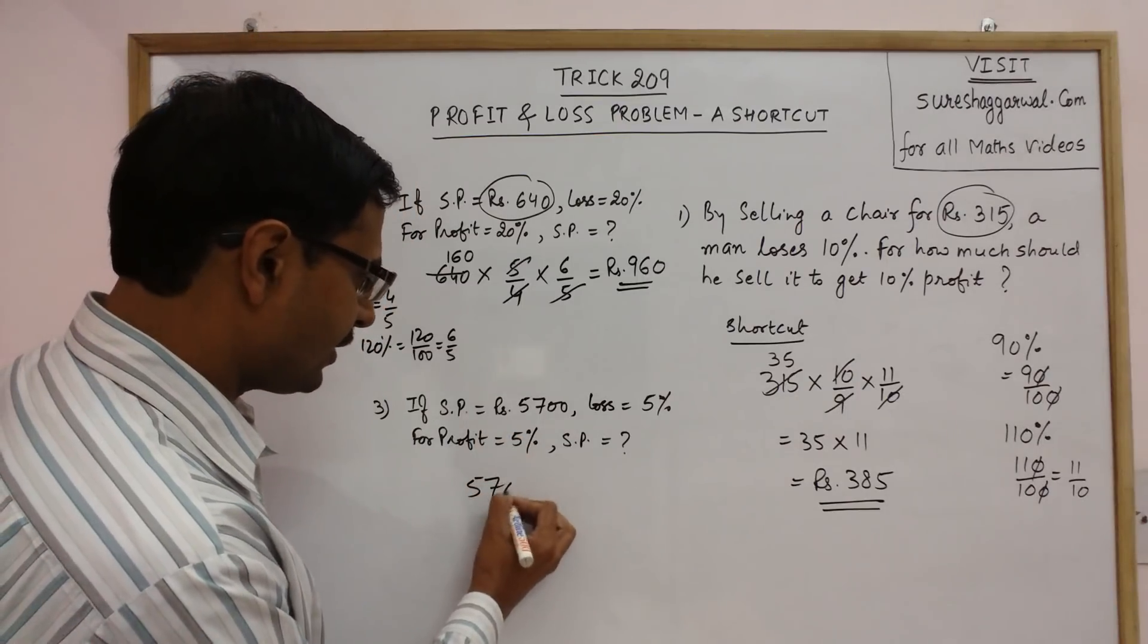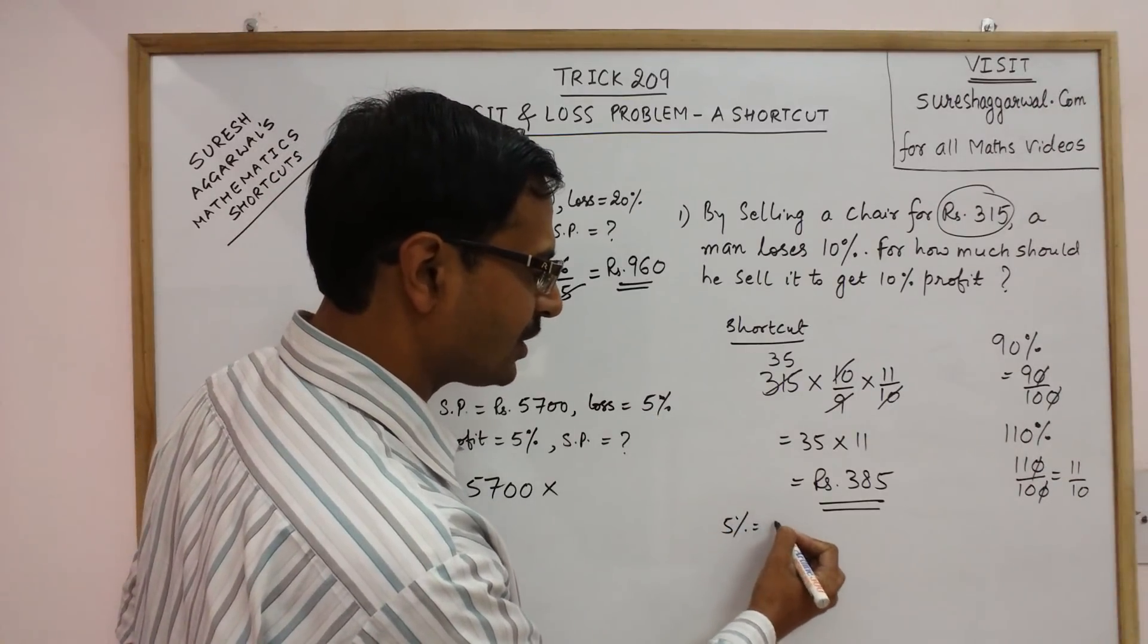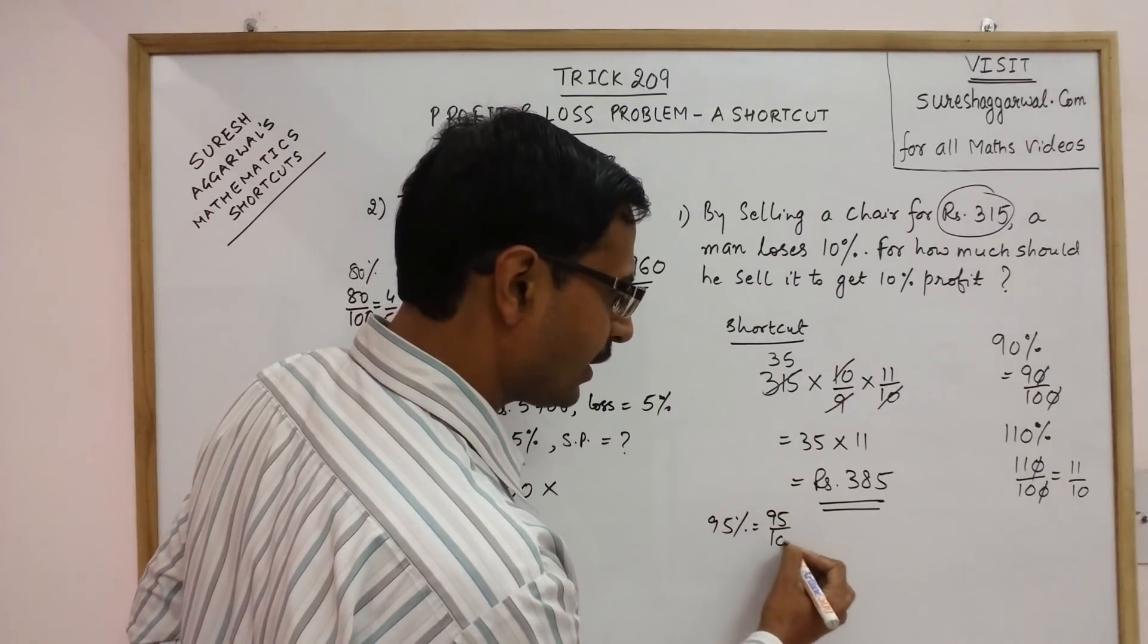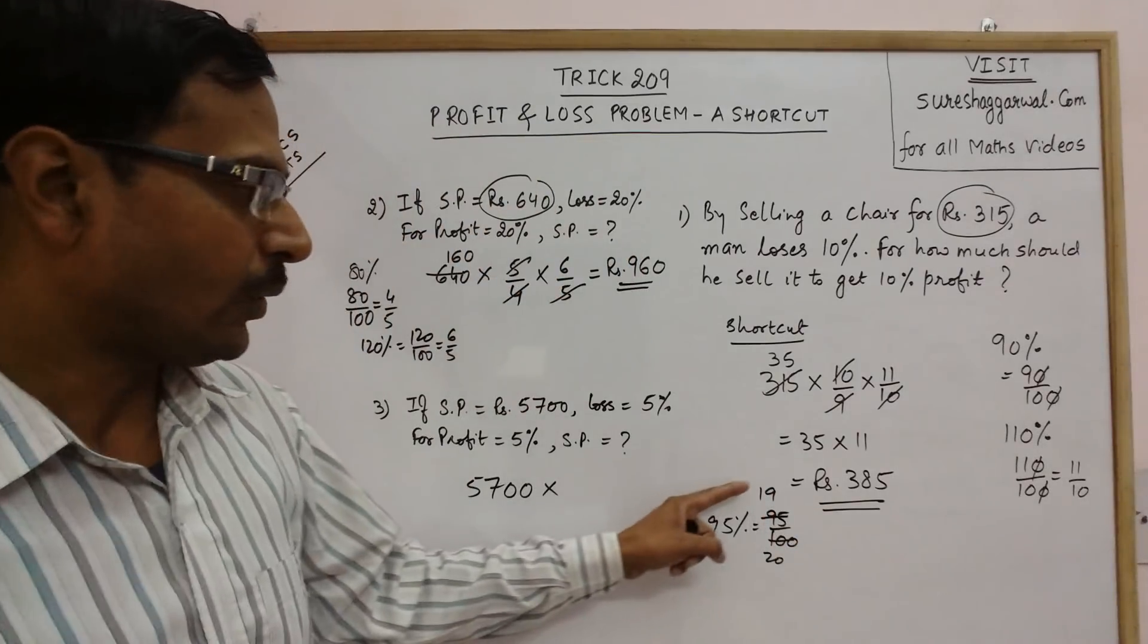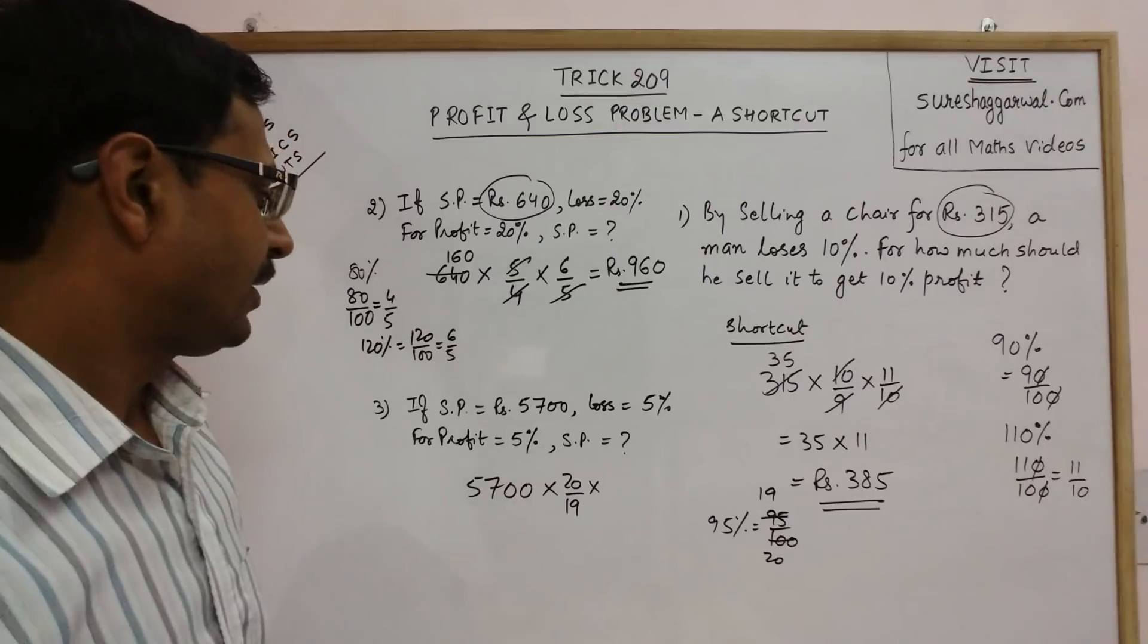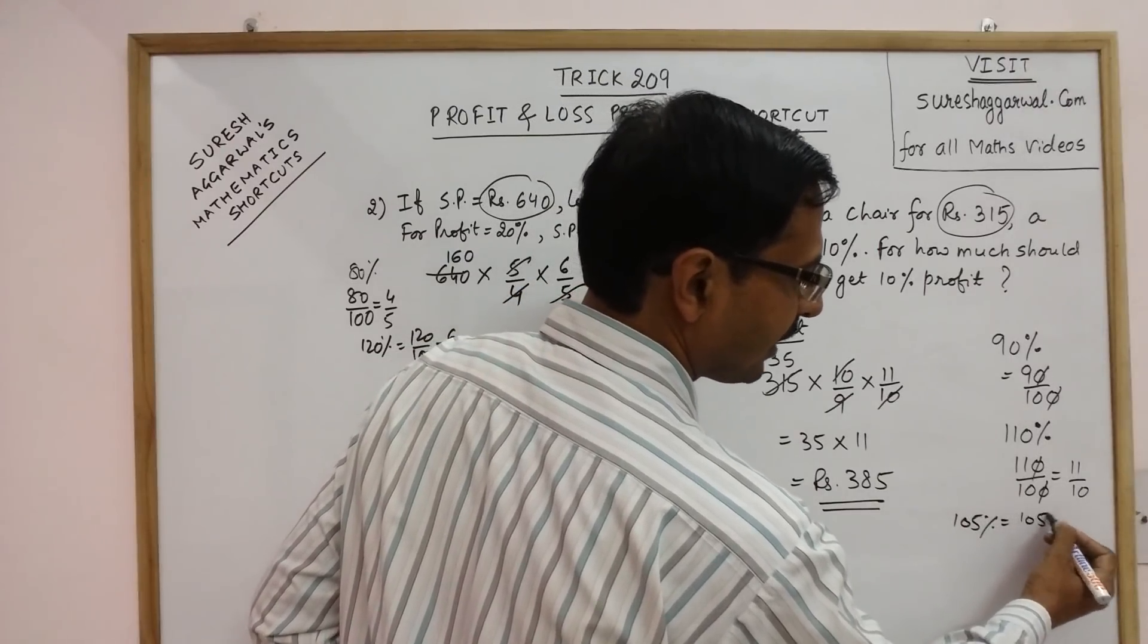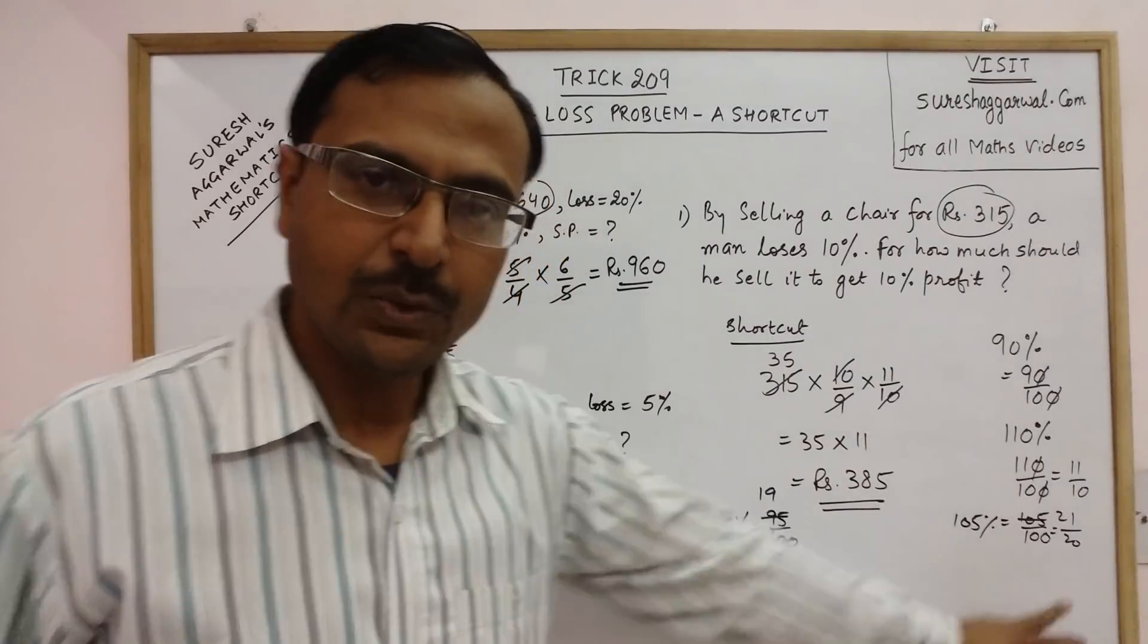Now the third problem: 5700 with 5% loss. If you convert 5% into fraction, 100 minus 5 is 95%, which is 95 upon 100. Cancel by 5 to get 19 upon 20. This is the case of loss so write the reciprocal: 20 upon 19. Now take the case of profit: 100 plus 5 gives 105%, which is 105 upon 100 equals 21 upon 20.